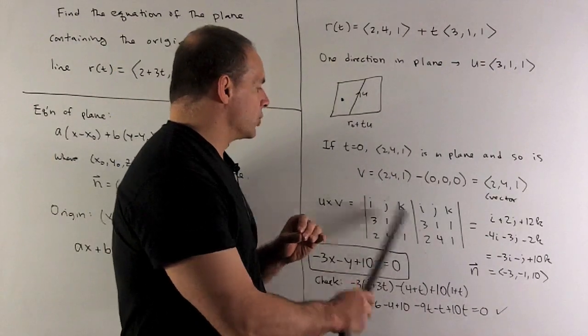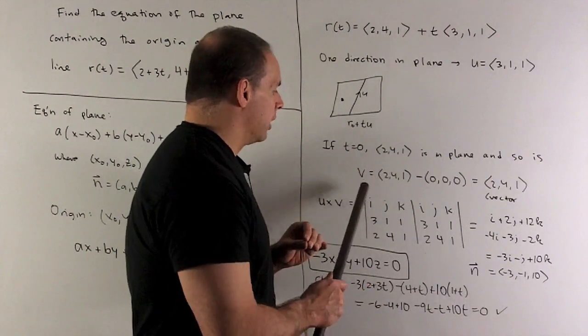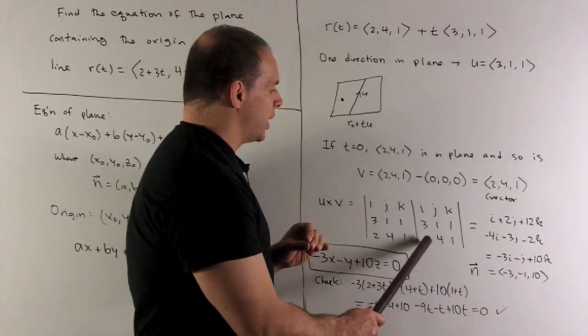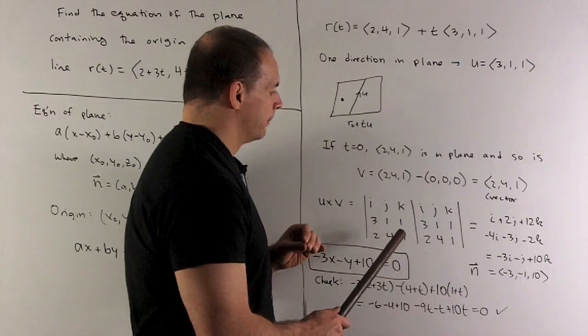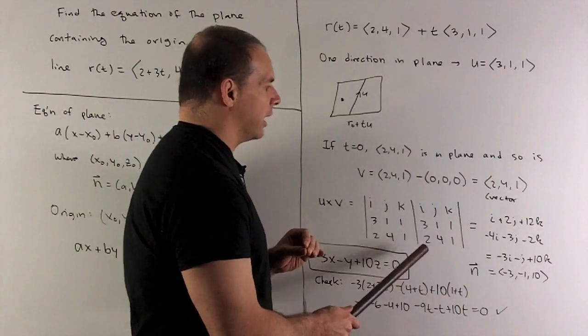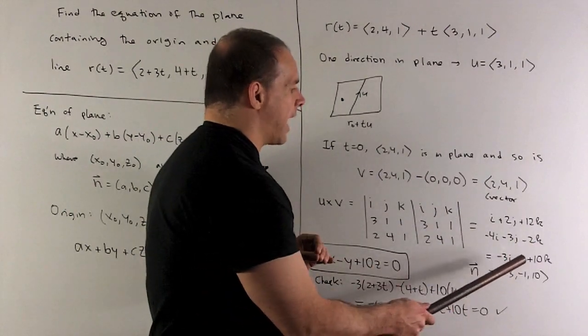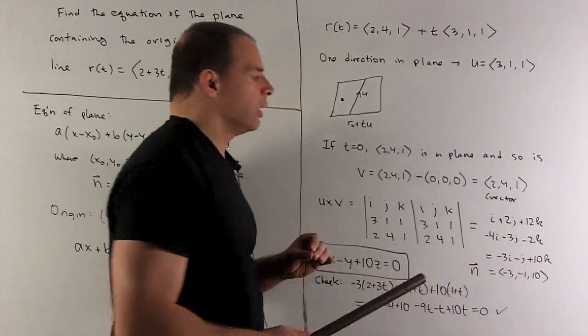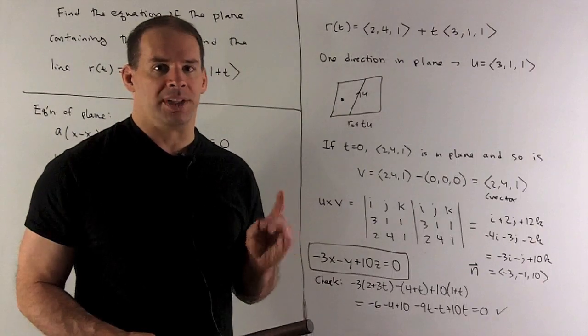So if I do the diagonals, what happens? I'll get i, 2j, 12k, minus 4i, minus 3j, minus 2k. Put all that together, I get minus 3i, minus j, plus 10k, or (-3, -1, 10).